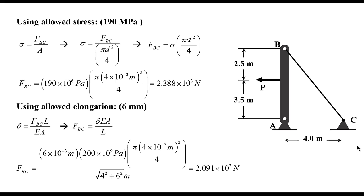We have 4, under the square root of course, 4 squared and 6 squared. 6 is just basically adding the 2.5 and the 3.5. And that will give me 2.091 times 10 to the 3 N. So I have these two forces.